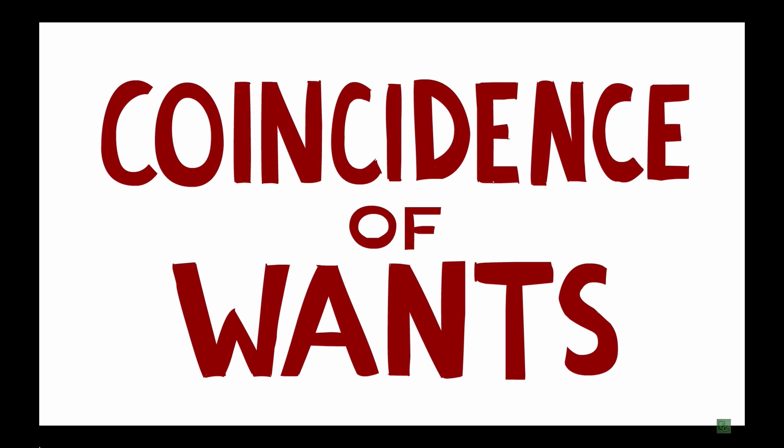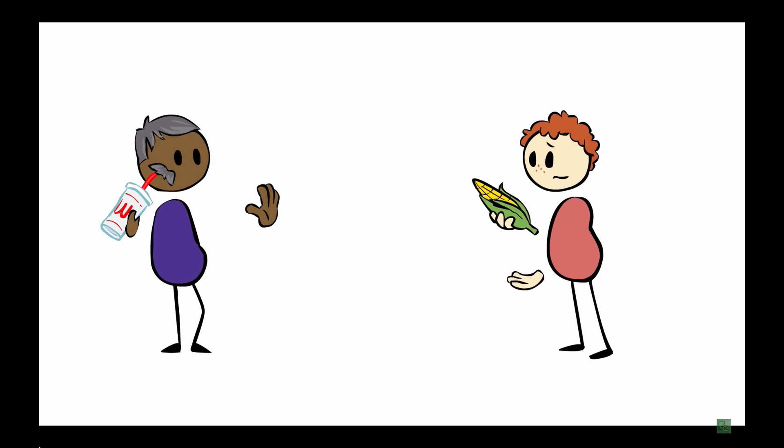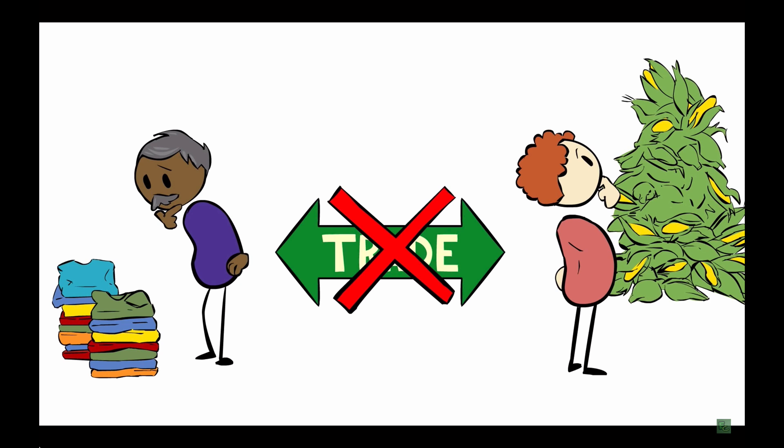Let's say that I make shirts, and you grow food. Well, if you want a shirt, and I want food, awesome, we can trade. But if I don't want your stupid food, or if you're all full up on shirts, well, we can't trade, can we? And that starts becoming a real problem for society if I want food, but you don't want my shirts.